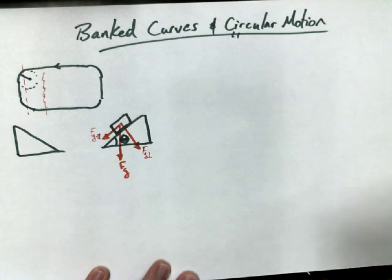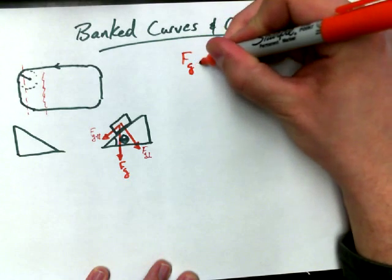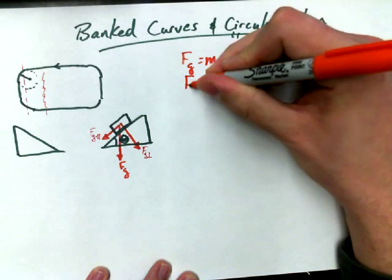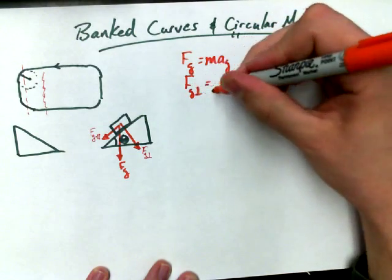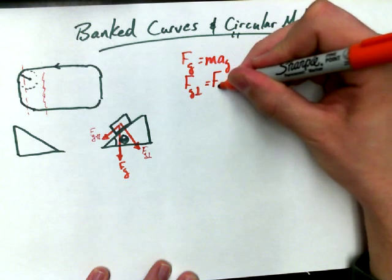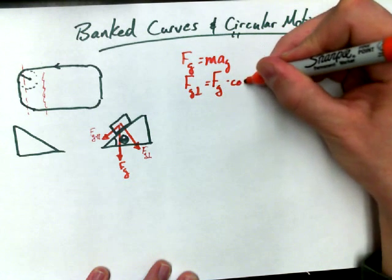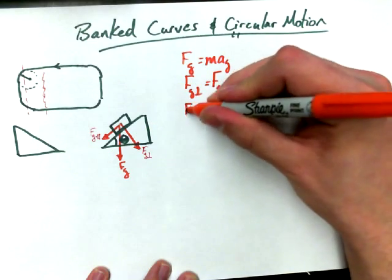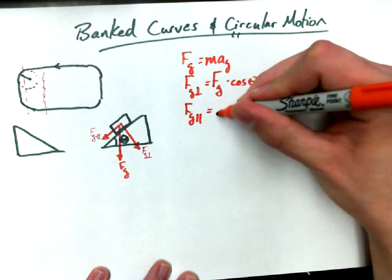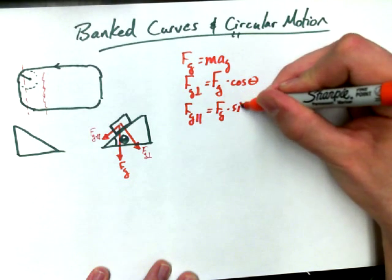And so we could calculate values like FG equals mass times acceleration due to gravity. We could say FG perpendicular, as we figured out earlier, is actually FG times cosine of theta, the angle of incline for this ramp shape. FG parallel was FG times sine of theta.